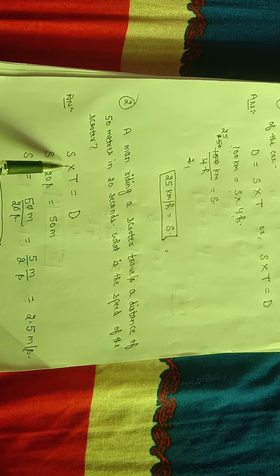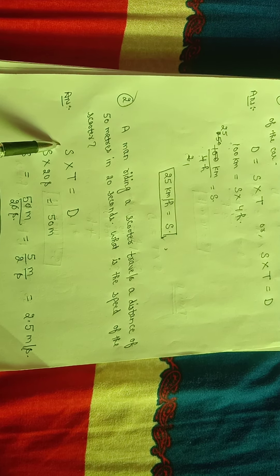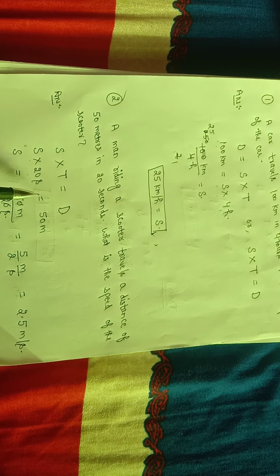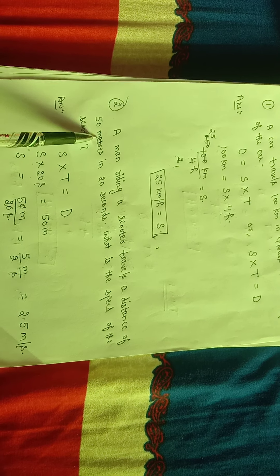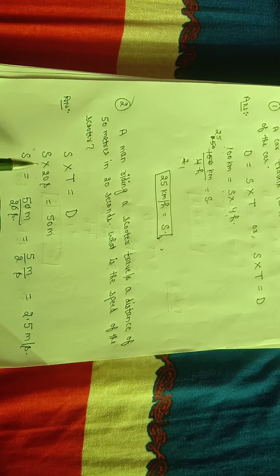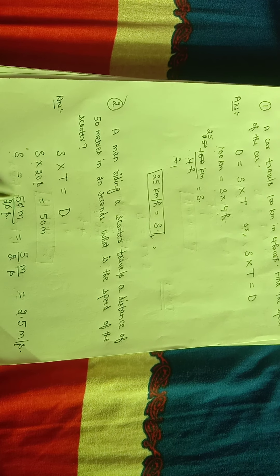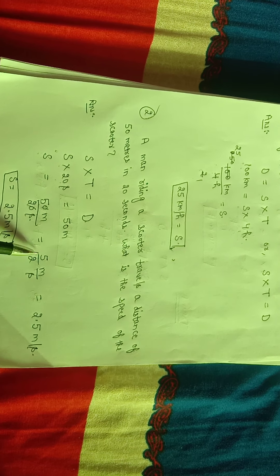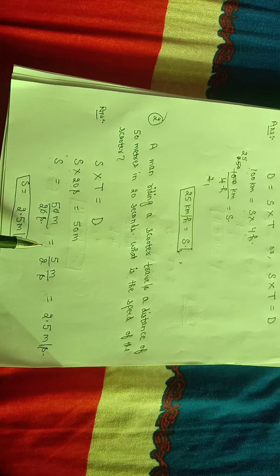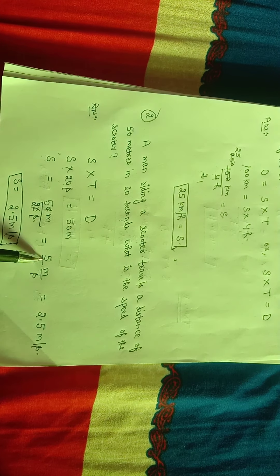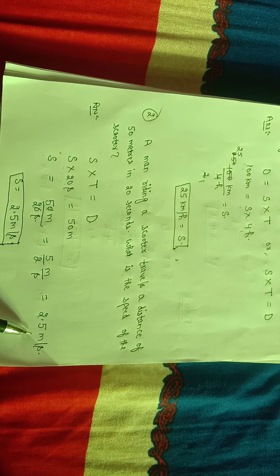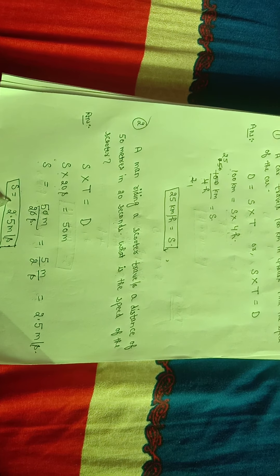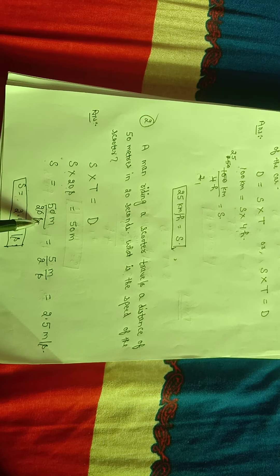So, S multiplied by T equals D. Speed is what we have to find, multiplied by time — time is 20 seconds — equals distance, which is 50 meters. So, S equals 50 meters divided by 20 seconds. Cancel the zeros: 5 upon 2 meter per second. Dividing 5 by 2 gives 2.5. So, the speed of the scooter is 2.5 meters per second.